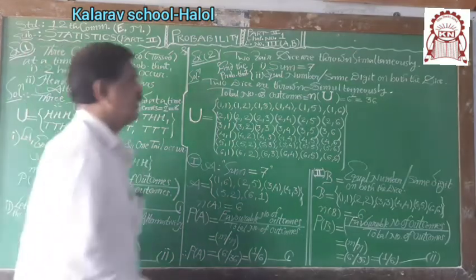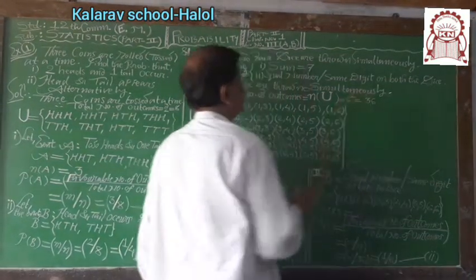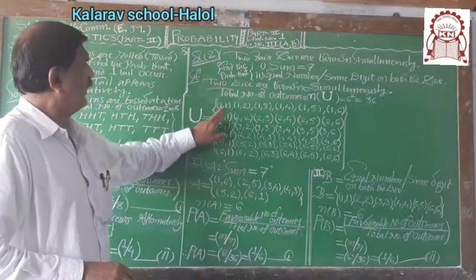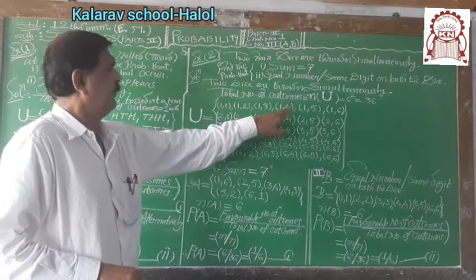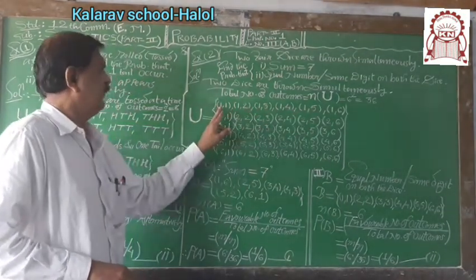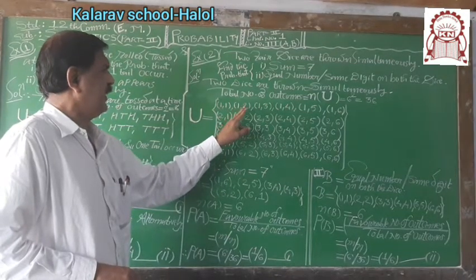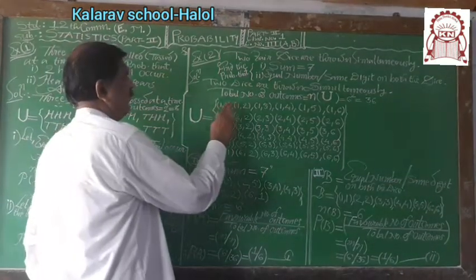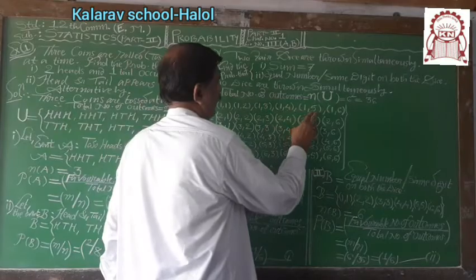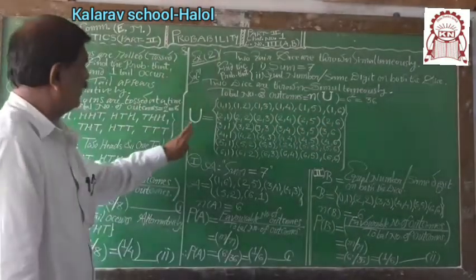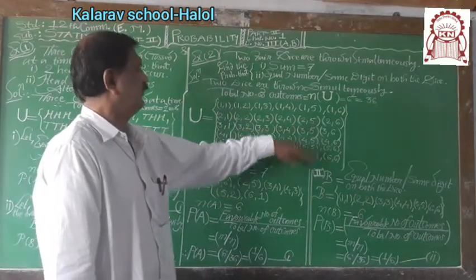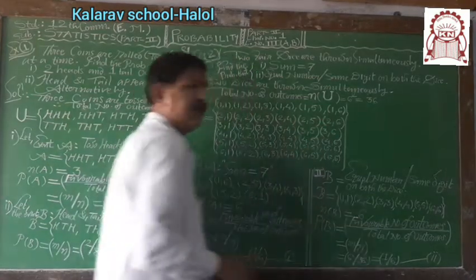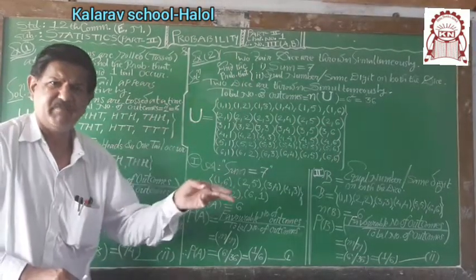6 raised to 2 because 6 number of faces and 2 means 36. Now what are the 36 outcomes? 36 outcomes are (1,1), (1,2), (1,3), (1,4), (1,5), (1,6) on the first die and on the second die. Same way (2,1), (2,2), (2,3), (2,4), (2,5), (2,6). Means 36 number of outcomes, total number of outcomes if 2 dice are thrown at a time simultaneously.